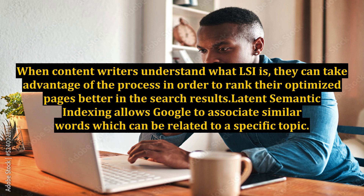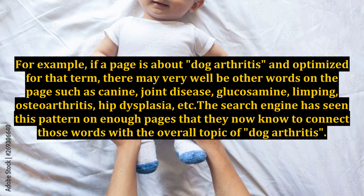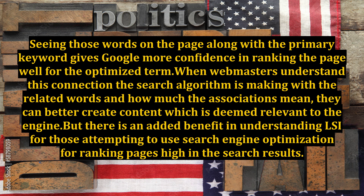Latent semantic indexing allows Google to associate similar words which can be related to a specific topic. For example, if a page is about dog arthritis and optimized for that term, there may very well be other words on the page such as canine, joint disease, glucosamine, limping, osteoarthritis, hip dysplasia, etc. The search engine has seen this pattern on enough pages that they now know to connect those words with the overall topic of dog arthritis. Seeing those words on the page along with the primary keyword gives Google more confidence in ranking the page well for the optimized term.